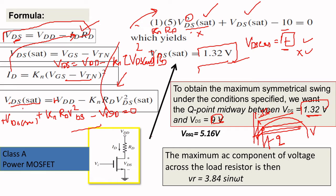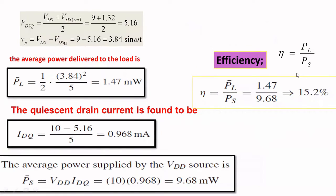So what are the two things you require now? One is VDSQ, another is your VP. How will you find VDSQ? You want to add the lower and minimum points. You want to find this center point, which is your VDSQ.